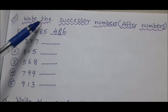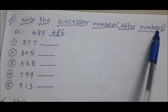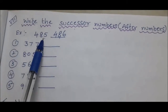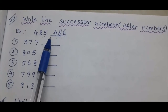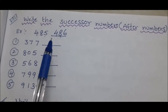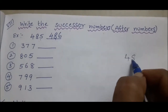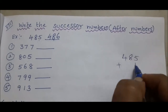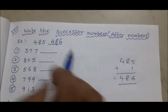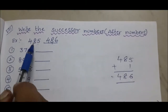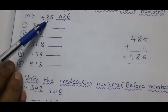Next topic: write the successor numbers, also known as after numbers. Example: 485 — the after number is 486. How do we get 486? Just add 1 to the given number. 485 plus 1 equals 486. This is the after number of 485. Remaining problems, follow the above example.